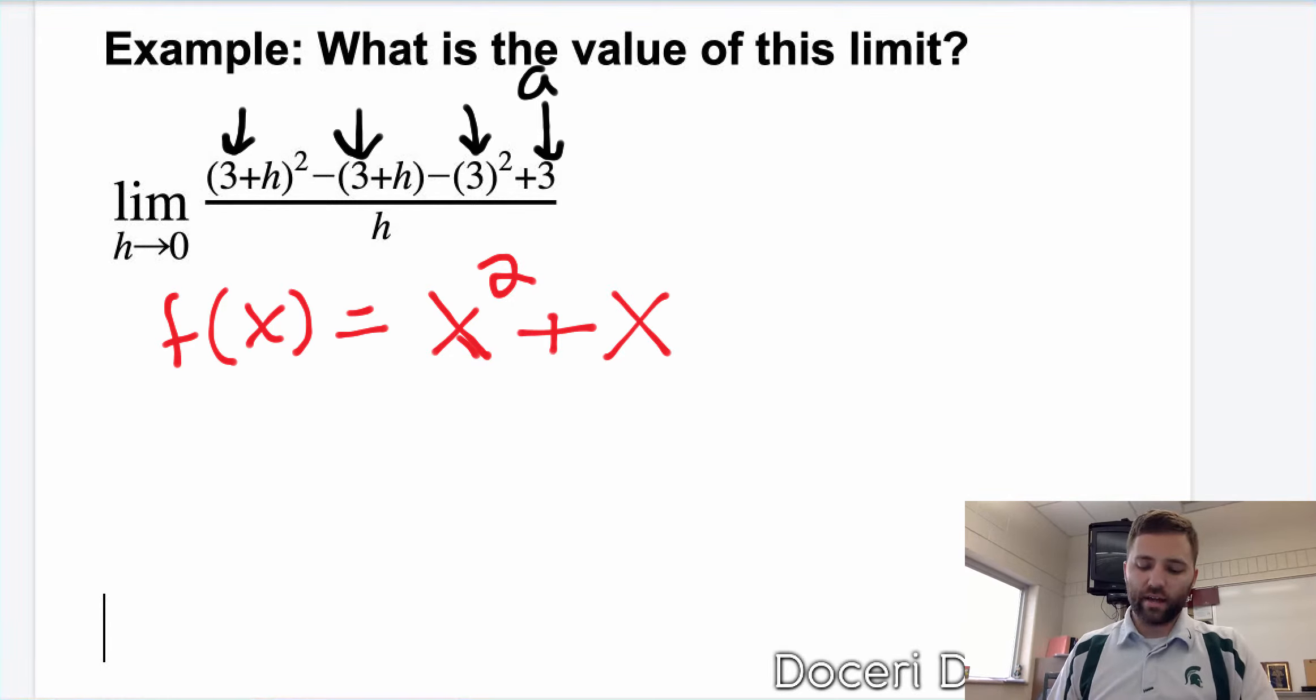I think it's actually a little bit easier to look at this part of the limit, because you can see that you've just plugged in the a value there. If a is 3, you plugged in 3 into the function. So it's 3² minus 3.